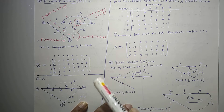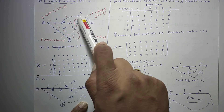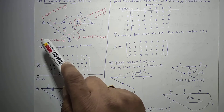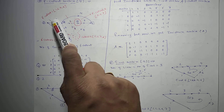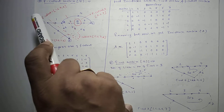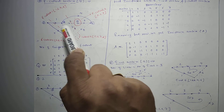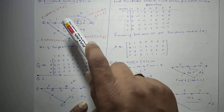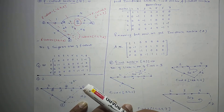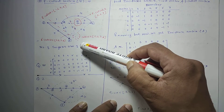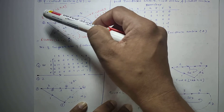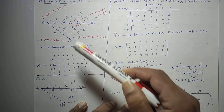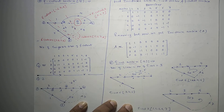To obtain f cut set 1, cut twig 1 along with the remaining links such that the graph divides into two parts. Making this cut, four branches are cut: 1, 6, 7, and 8. So f cut set 1 is formed by branches 1, 6, 7, and 8. For f cut set 3, you cannot cut in a way that two twigs are cut simultaneously — only twig 3 should be cut so the graph divides into two parts.